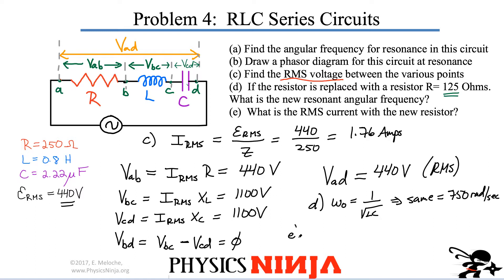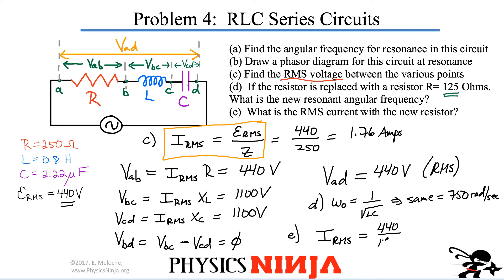Part E asks: what is the RMS current now? The RMS current equals the RMS voltage divided by impedance, which at resonance equals resistance. We're not changing the AC source — it's still 440 volts. But we're reducing the resistance from 250 to 125 ohms, so the current doubles. The new RMS current is 440 divided by 125 ohms, giving 3.52 amps.